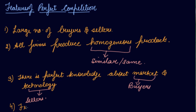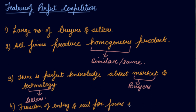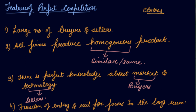The fourth feature is freedom of entry and exit for firms in the long run. In the long run, if you want to enter the personal care products industry, the watch industry, or the clothing industry, you can do so easily. Similarly, if you have a clothing business and are not able to earn the expected profit, you can easily exit the firm. So these are the four features of the perfect competition market.